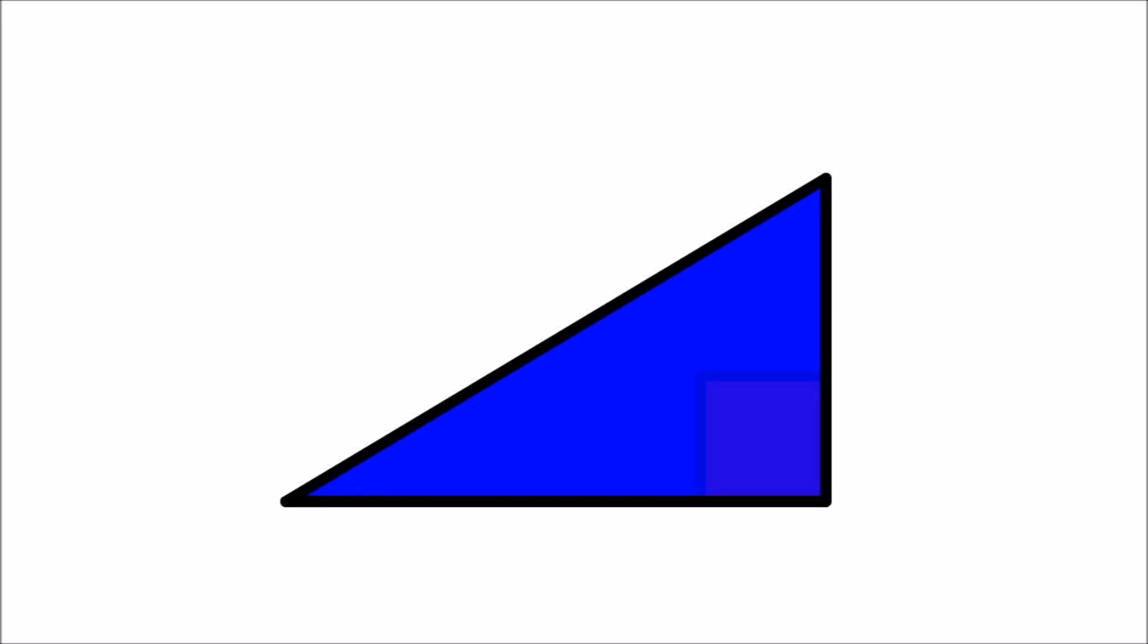It's a right triangle, in fact, which means that one of its corners looks just like the corner of a square. We know the lengths of the two shorter sides, called them A and B, and we want to find the length of the longer, slantier side, called that C.